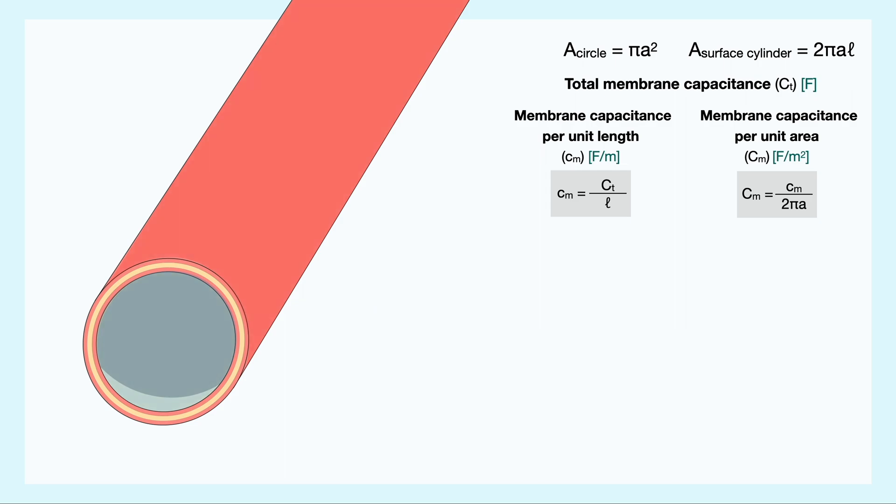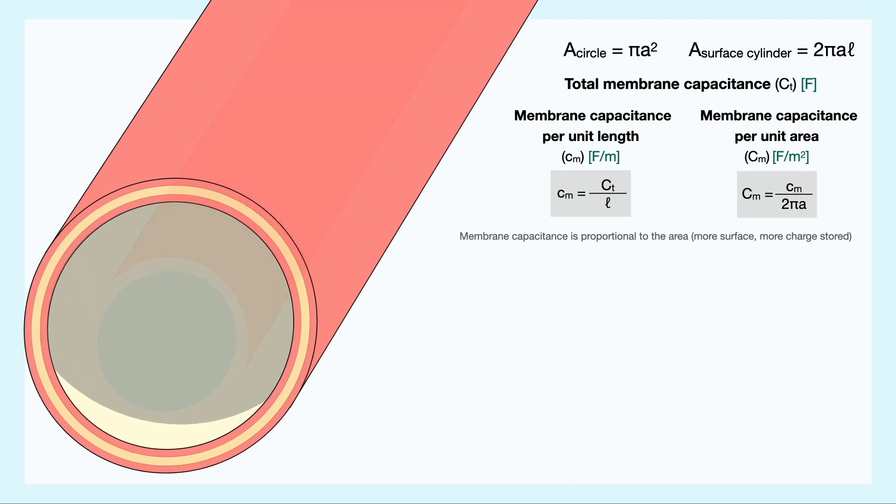One simple relation we can already establish with our model is that if we decrease the radius of the cylinder, we decrease the size of our model dendrite, and thereby we reduce the amount of charges that the membrane can store. Hence, the capacitance is proportional to the size of the cylinder.